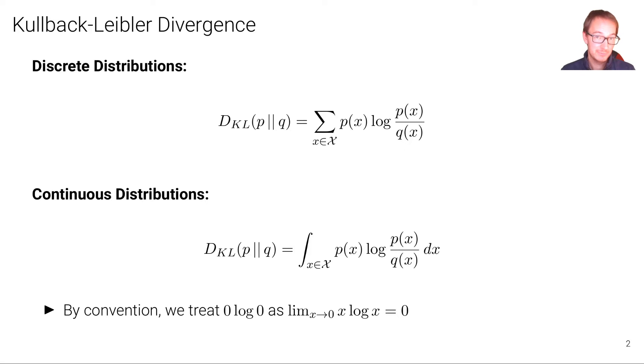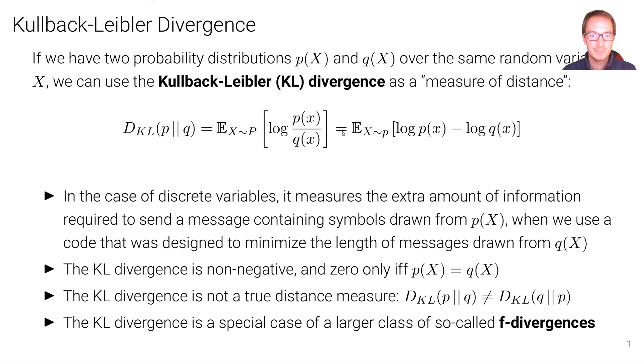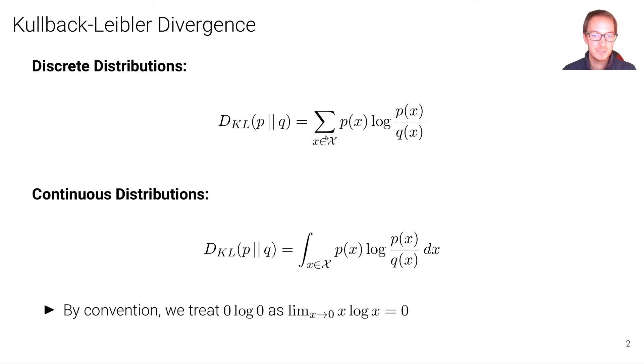Now, of course, we can use these divergences both in the discrete and the continuous case. So in the discrete case, we again, as before for the entropy, just write now the expectation as a summation over the state space of x, p(x) the probability of x times log p over q. And similarly, in the continuous case, we just replace the summation with an integration. And again, by convention, we treat 0 log 0 to be equal to 0.